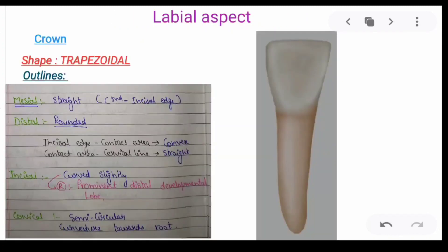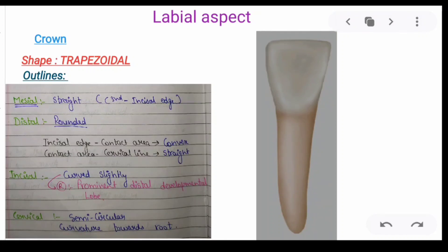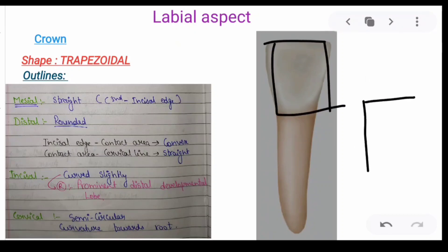Coming to the labial aspect crown: the shape of the crown is trapezoidal. We can see that the crown resembles a trapezoidal shape in the labial aspect.